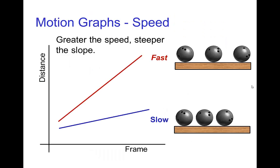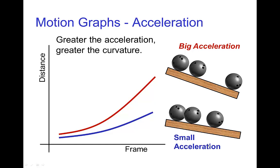Here's another way of viewing the distinction between speed and acceleration using the motion graph. For an object rolling slowly at a constant speed, we have a curve that's not very steep. If it's going faster, so the spacings are larger, then the motion curve will have a steeper slope. Now with acceleration, the motion curve is not a straight line — it has curvature. If the acceleration is small, the curvature is small because the speed is not changing very rapidly. But when we have a large acceleration, there is a lot of curvature in the motion curve.